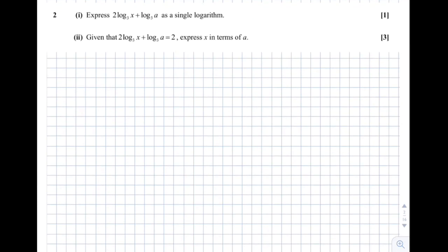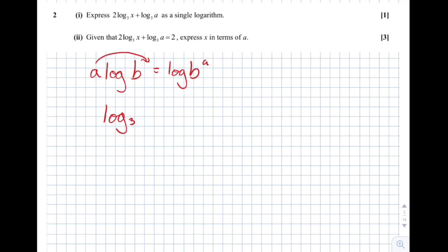Question 2: express 2 log base 3 of x plus log base 3 of a as a single logarithm. We're using log laws to pack things together. We know that a log b can bring the a into the power to make log b to the a. So with 2 log base 3 of x, we change that into log base 3 of x squared plus log a. Now using the law that two logs added together become log of those two things multiplied, we get log base 3 of ax squared.